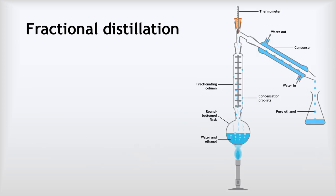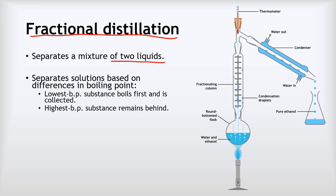Next up we have fractional distillation. This enables us to separate a mixture of two liquids. Again, it exploits differences in boiling point. The idea is that the substance with the lowest boiling point boils first and is collected, and the substance with the highest boiling point remains behind.